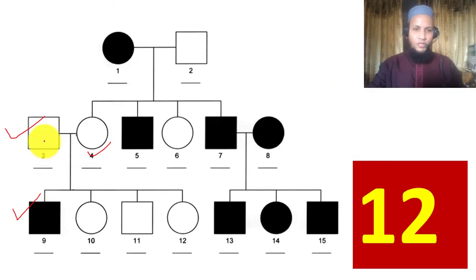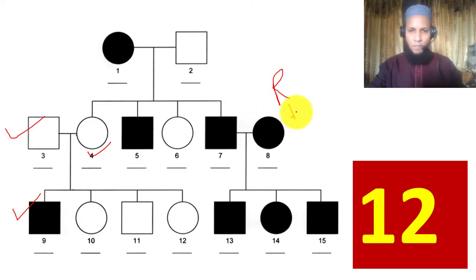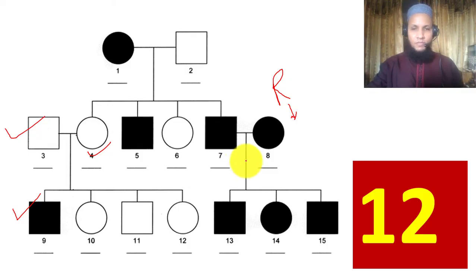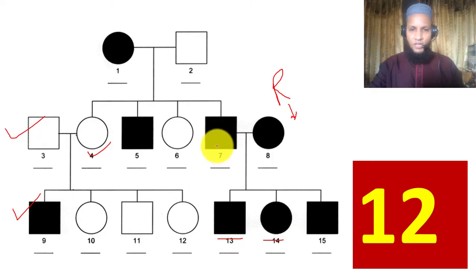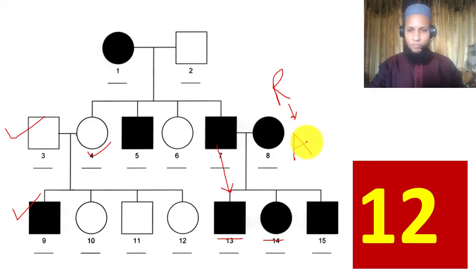Example 12: There is no skipping of generation — wait, here it is recessive. Both males and females are affected, and there is male-to-male transmission. Therefore this is autosomal recessive.